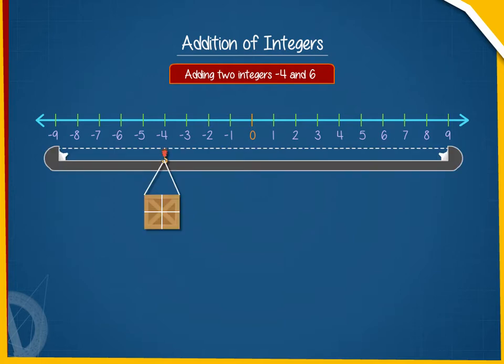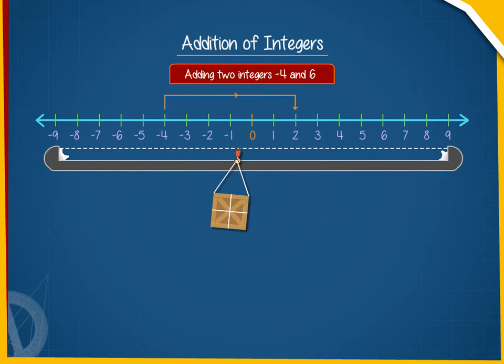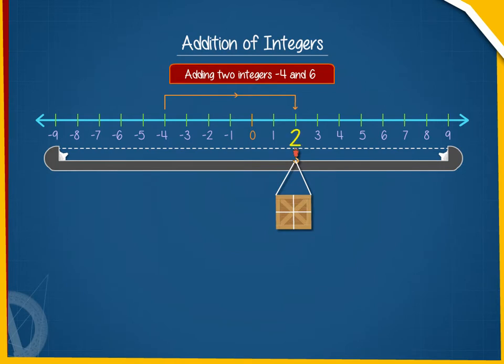On the number line, we will start from minus 4 and shift 6 numbers towards the right side of minus 4. We finally reach at 2. So, minus 4 plus 6 is equal to 2.